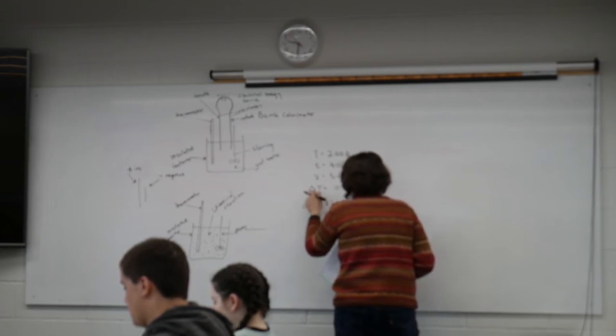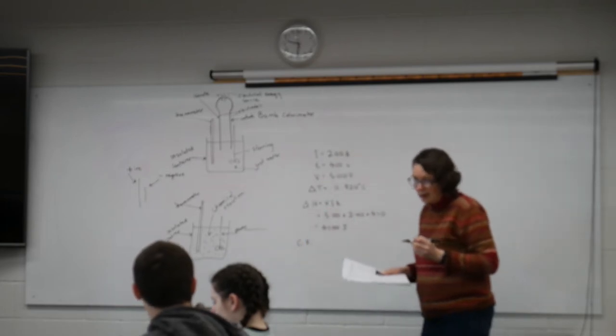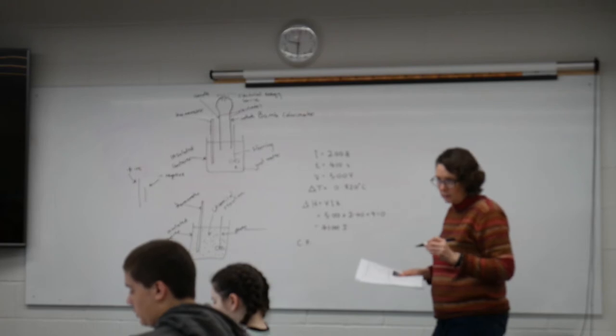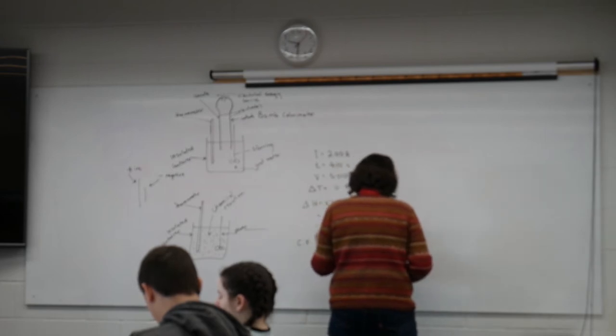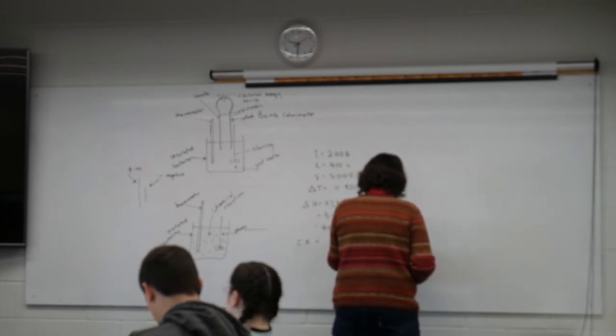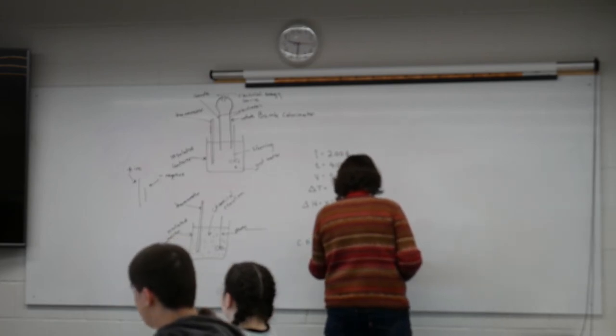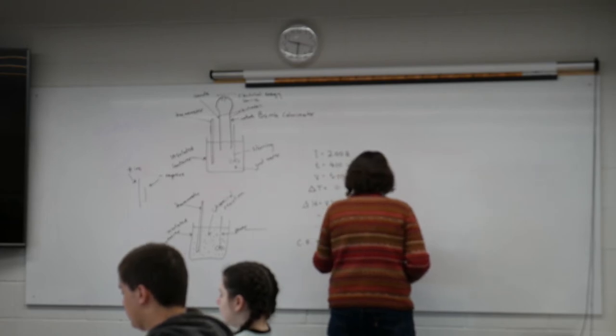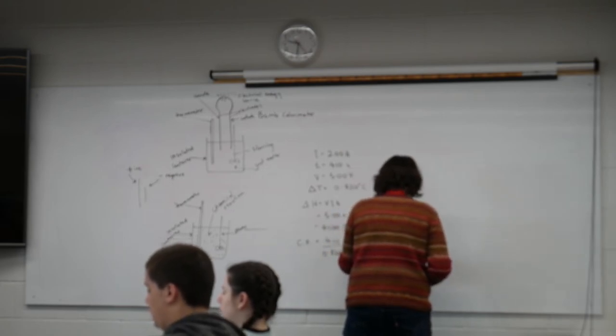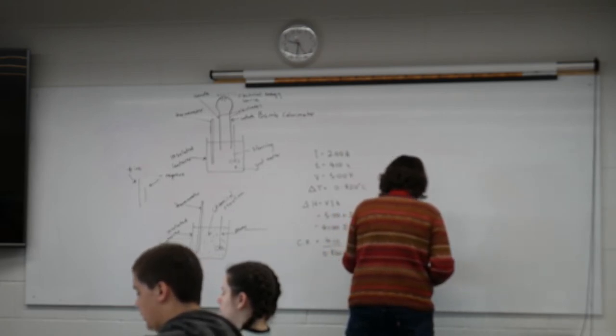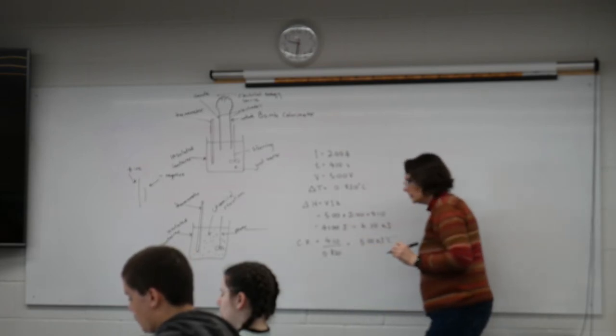So our calibration factor, which you can write as CF, is then equal to 4.10 kilojoules divided by our change in temperature, 0.820 degrees. We end up with 5.00 kilojoules per degree Celsius as our calibration factor.